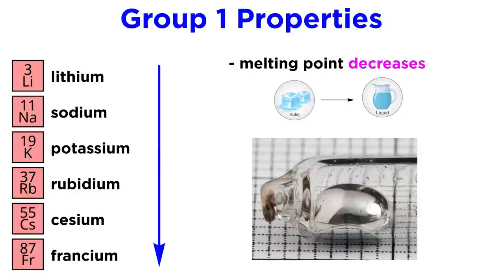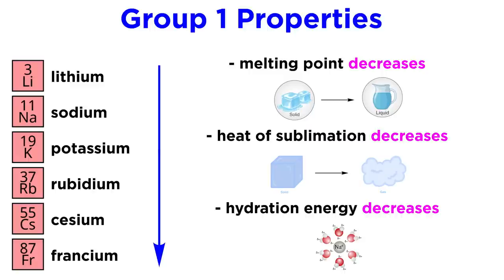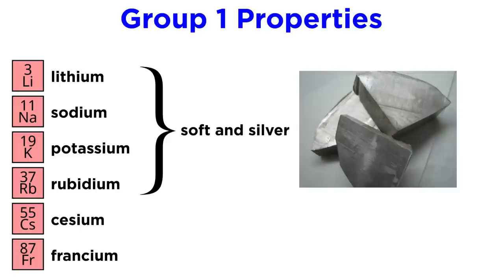Now a bit on the properties of these elements. Their melting points decrease going down the group, though they are quite low in general as far as metals are concerned, given the low lattice binding energies that result from having only one valence electron. The same trend can be applied to their heats of sublimation and hydration energies.